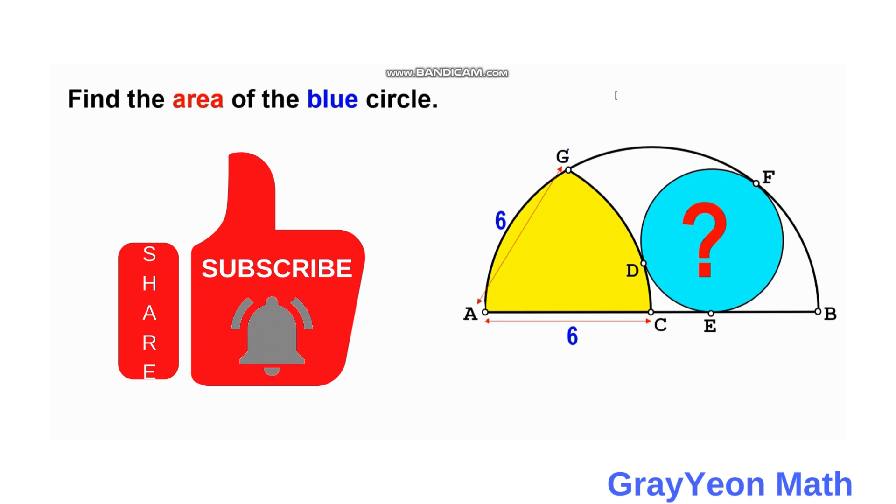Welcome to GrayYeon Math. We are asked to solve this problem. We have this semicircle, this white semicircle, and inside this white semicircle is a yellow region formed by this arc GDC. This arc has the same radius as of this white semicircle with center at C.